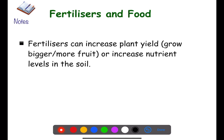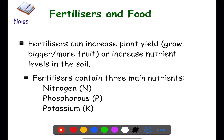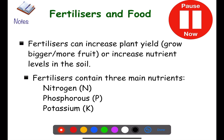Fertilizers can be used to increase the plant yield — to grow bigger or more fruit — or they can be used to increase the nutrient levels of the soil. Fertilizers contain three main nutrients that plants need: nitrogen, phosphorus, and potassium. These need to be replaced into the soil where we have crops that we harvest. Pause the video now and copy these notes.